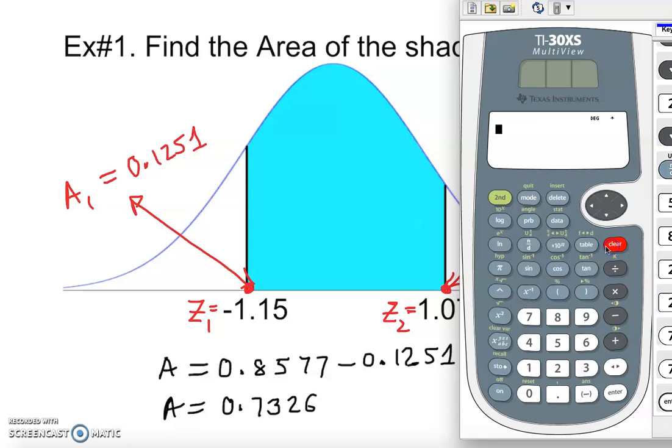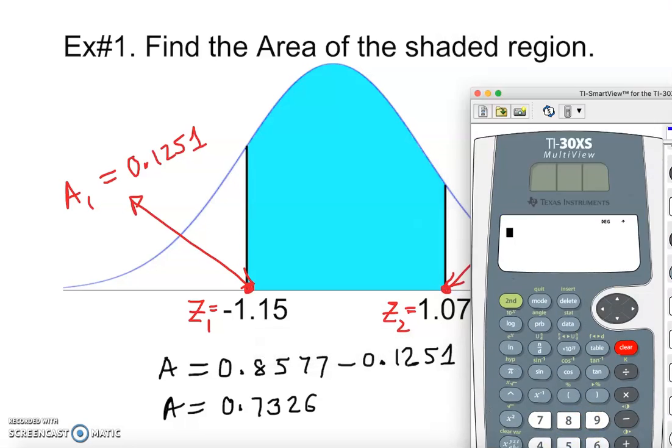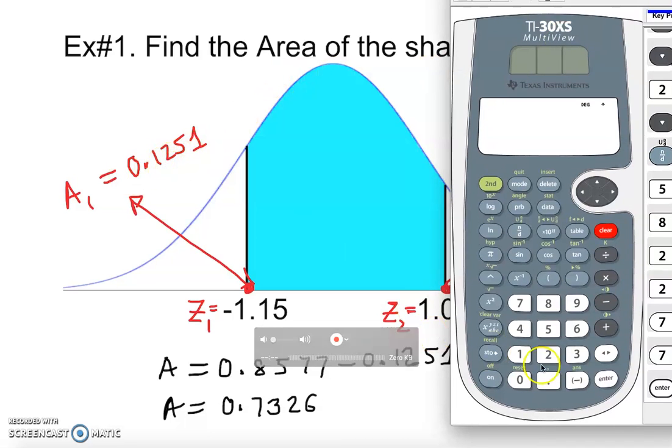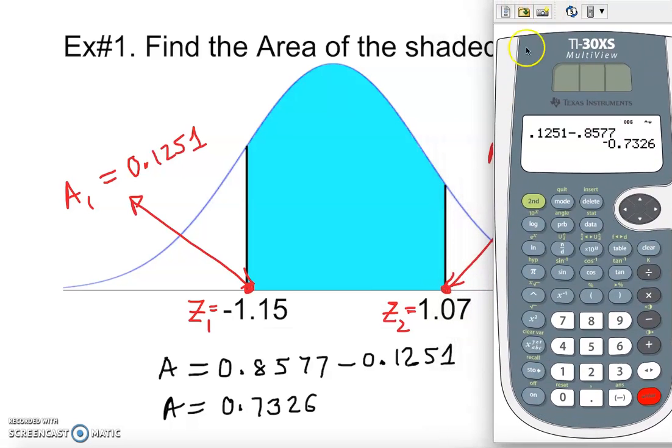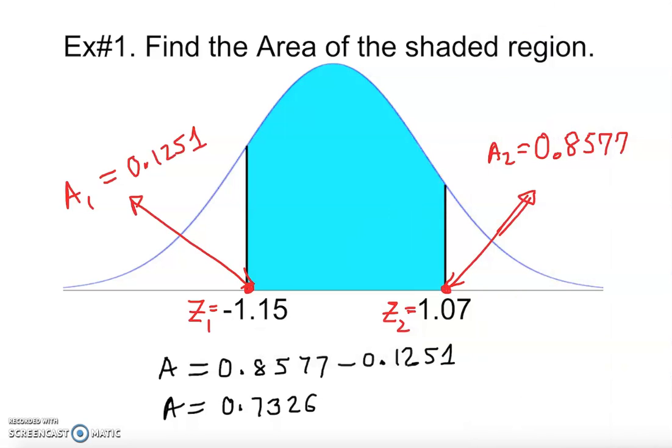I want to make sure we all understand that sometimes some students actually do it like this: they go with the smaller number first, they put 0.1251 in the calculator then subtract 0.8577, and this comes out negative. Your area can never be negative. Your area can never be negative under the normal curve. Total area under the normal curve is one, so it has to be from zero to one. It cannot be negative because this line is not going down. Therefore you just drop the negative sign. You know by default it's going to be positive.